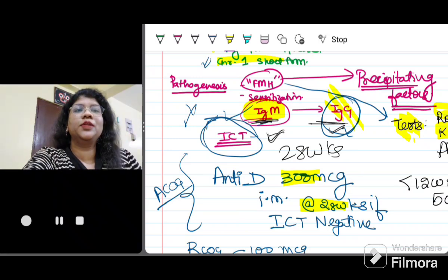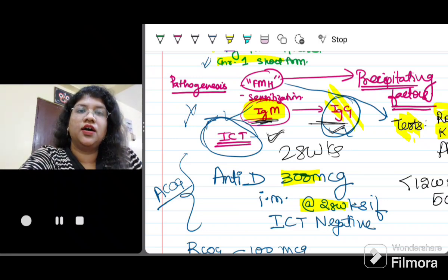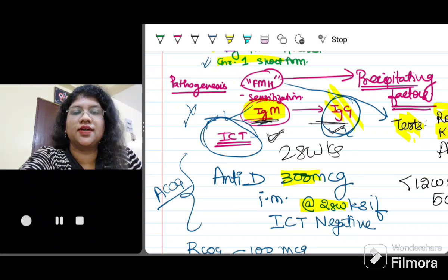So ICT you do. If it is negative, then we will be repeating it at 28 weeks. Why we do at 28 weeks? It is said that from many studies and research that has been done, it has been found that 28 weeks offers good protection for the current pregnancy also. So at 28 weeks when you do ICT and again you find it negative, you are going to administer her anti-D immunoglobulin.